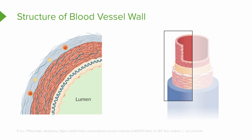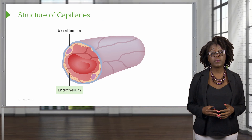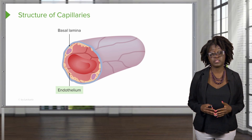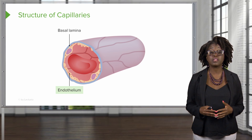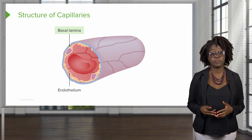The walls of all of our vessels are going to have three layers or tunics. Starting on the inside, we have the tunica intima, followed by the tunica media, and the outermost layer being the tunica externa. Our capillaries are a little different in that they do not have these three layers. Instead, our capillaries are just made up of an endothelial layer and a sparse basal lamina surrounding it.